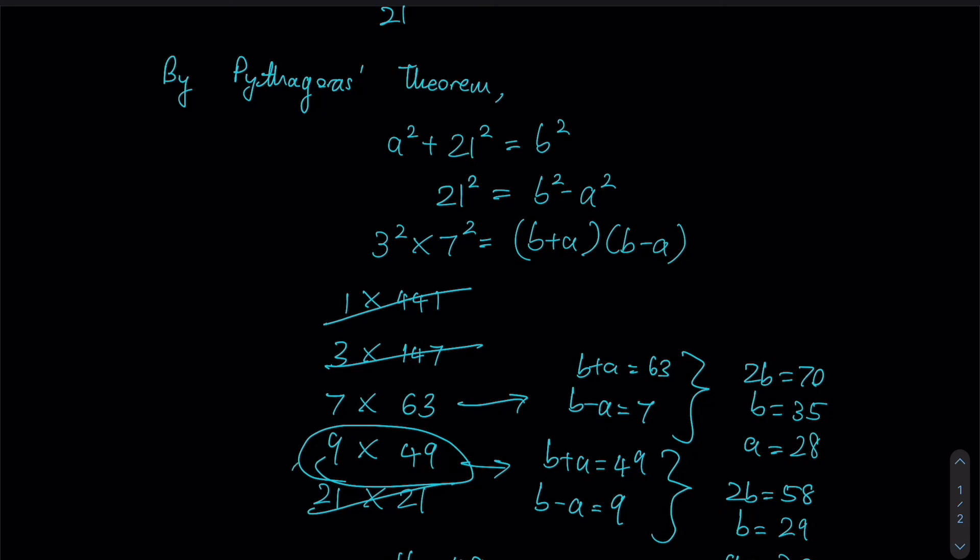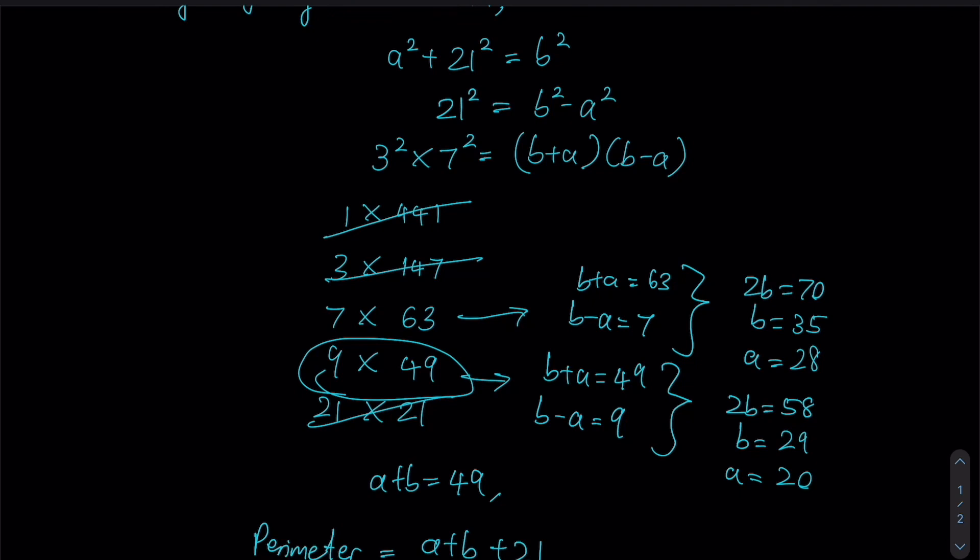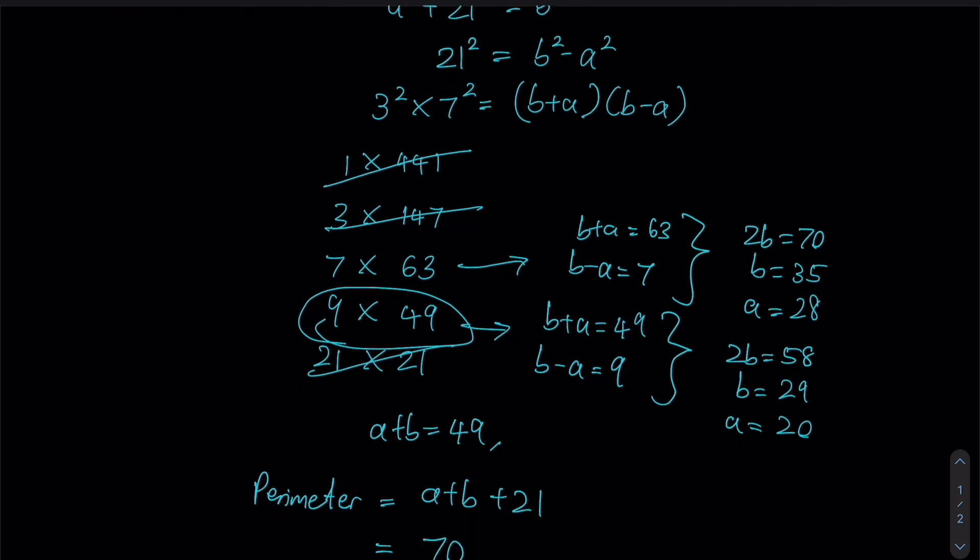Afterwards, it is just rearranging your prime factors to obtain a set of values that would give us the least possible value of b + a within the boundaries of this question.